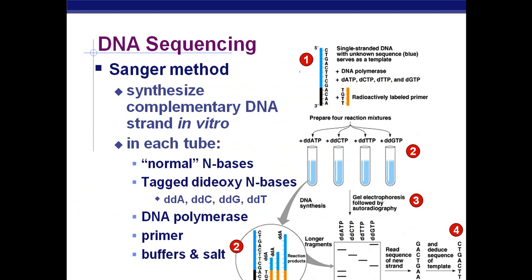Through the Sanger method of DNA sequencing, what will happen is we will synthesize some complementary DNA in vitro — basically in a test tube. In vivo would be in a living organism. In each test tube, you would add a single strand of DNA with an unknown sequence as your template, some DNA polymerase, some normal nitrogenous bases — A, C, T, and G — and then the dideoxyribonucleotides.